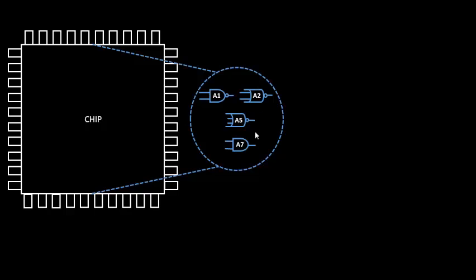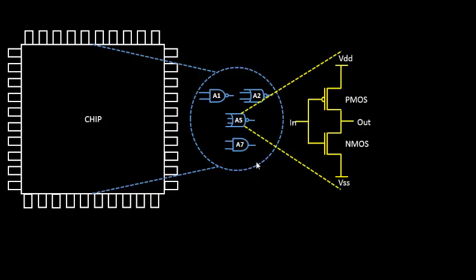These are the abstract-level behaviors of something else. Let us open up one of the gates — let's take gate A5. When you open it up, it is made up of CMOS inverters. This is what we call a CMOS inverter; we'll get into the details of that later. It consists of a bunch of PMOS transistors at the top and NMOS transistors at the bottom, and this is how you achieve the functionality of a CMOS inverter. There is a reason behind this structure, which we'll cover in some time.